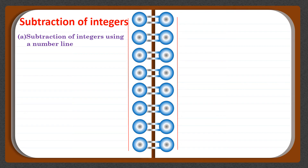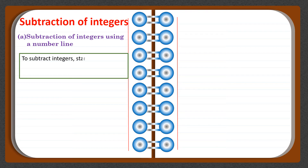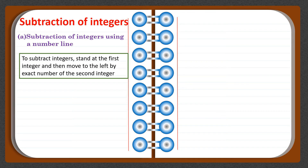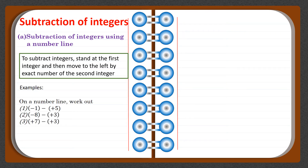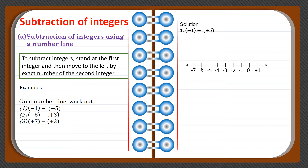We start subtraction of integers using a number line. To subtract integers, stand at the first integer and then move to the left by the exact number of the second integer. We move to the left because we are subtracting. We may also move to the right depending on the kind of integer given. The first example is minus one minus positive five — we are subtracting a negative and a positive integer.